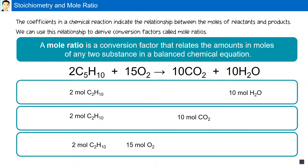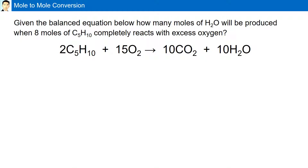We can use this relationship to solve any mole ratio problem. For example, given the balanced chemical equation below: how many moles of H2O will be produced when 8 moles of C5H10 completely reacts with excess oxygen? In the equation, two moles of C5H10 produces 10 moles of CO2 and 10 moles of H2O. We need to figure out what we are given and what we are required to obtain — here, we are required to obtain H2O. Two moles of C5H10 will produce 10 moles of H2O.